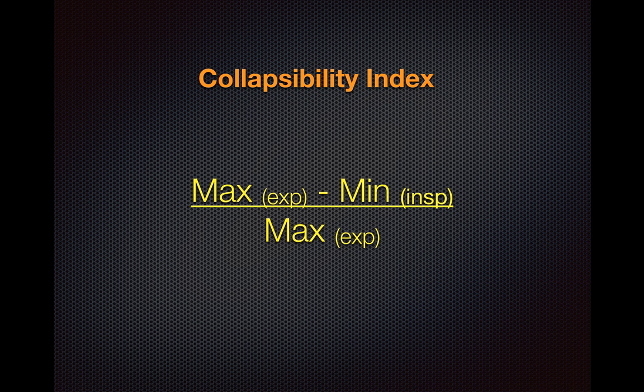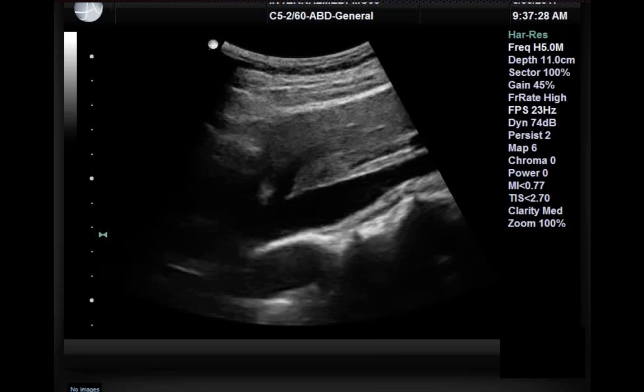The collapsibility index is measured as follows: you take the maximum diameter of the IVC — which in a spontaneously breathing patient is typically in the expiratory phase — minus the minimum diameter, which is typically in the inspiratory phase, divided by the maximum diameter. Present that as a percentage, and that gives you the collapsibility index.